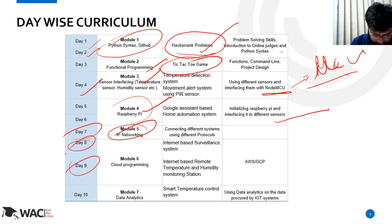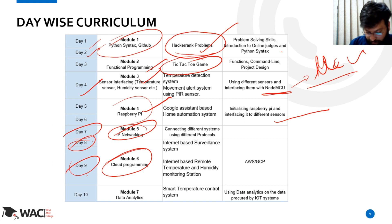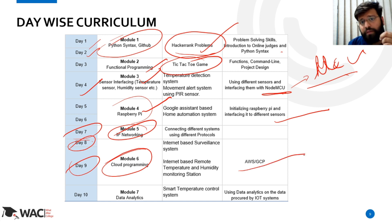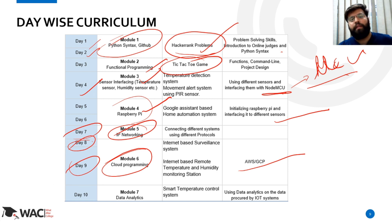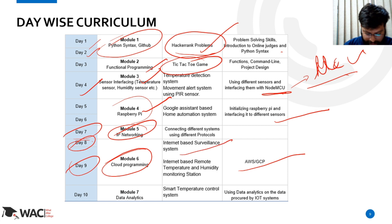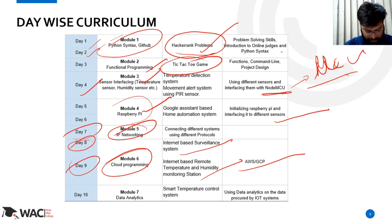Days 8 and 9 are for cloud programming, in which we will be using AWS (Amazon Web Services) and Google Cloud programs for applications like internet-based surveillance systems and internet-based remote temperature and humidity monitoring systems.